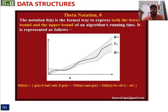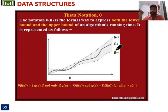Moving to Theta notation. Theta notation is the formal way to express both the lower bound and the upper bound of an algorithm's running time. It is represented with both an upper bound and a lower bound in its expression.